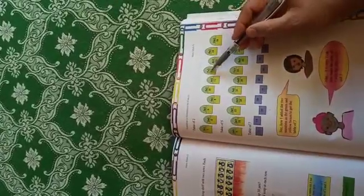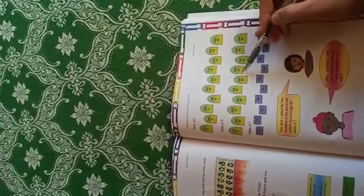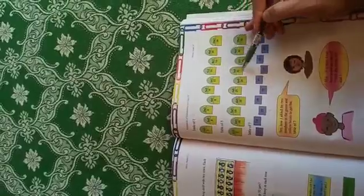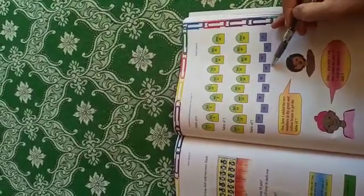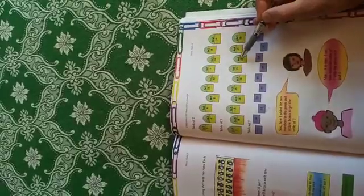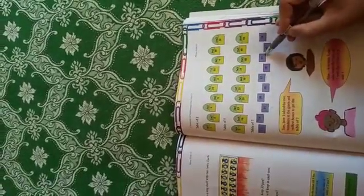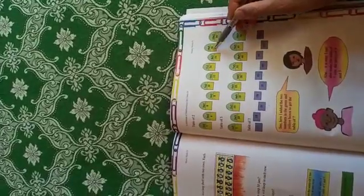Two sevens are fourteen, five sevens are thirty-five, fourteen plus thirty-five makes forty-nine. Two eights are sixteen, five eights are forty, sixteen plus forty makes fifty-six.